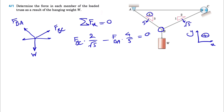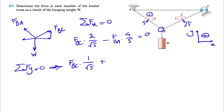The second equation is the sum of all forces in the Y direction equals zero. We have the Y component of FBC pointing upward — positive FBC times 1 over √5 — and the Y component of FBA pointing upward — positive FBA times 3 over 5. We also have the weight W pointing downward, so the full equation sums to zero.